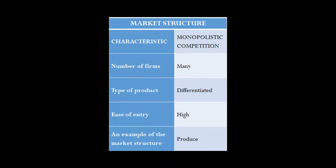Here we see the three key characteristics of monopolistic competition. We see some similarities to perfect competition: number of firms — many; ease of entry — high. Those two are exactly the same as perfect competition. The fact that there are a lot of firms means each firm's output is a tiny percentage of the market output. In oligopoly, each firm has a fairly significant percentage of output, and when one makes a decision to raise or cut a price it actually affects the profit maximization calculations of the other firms.